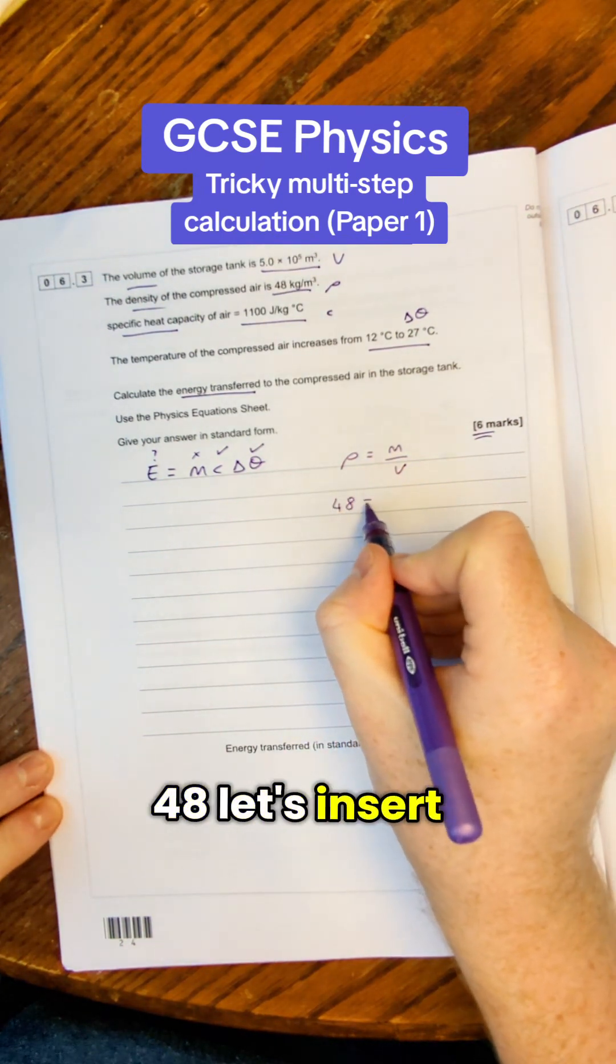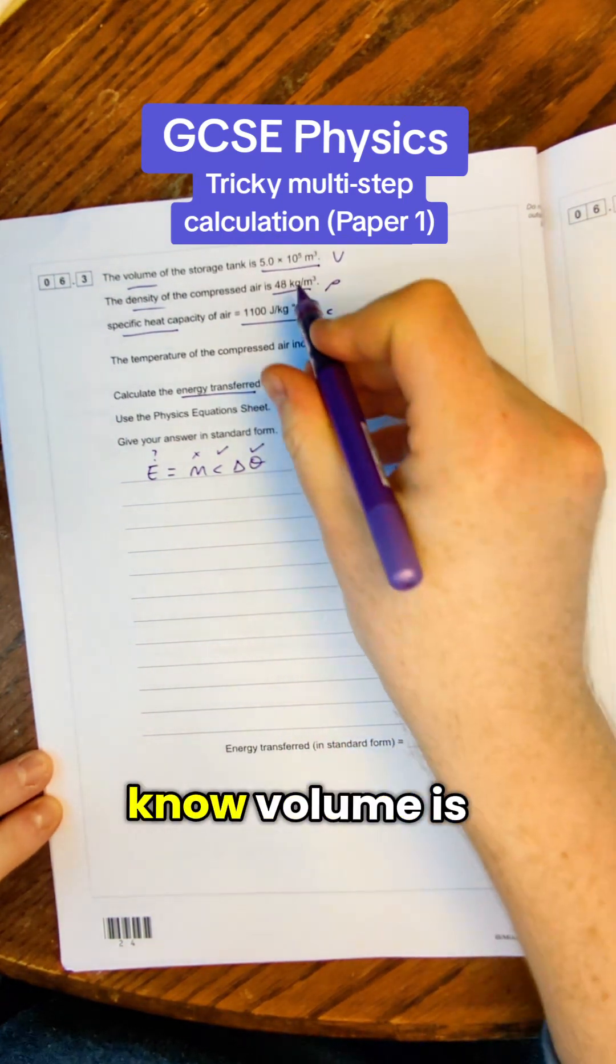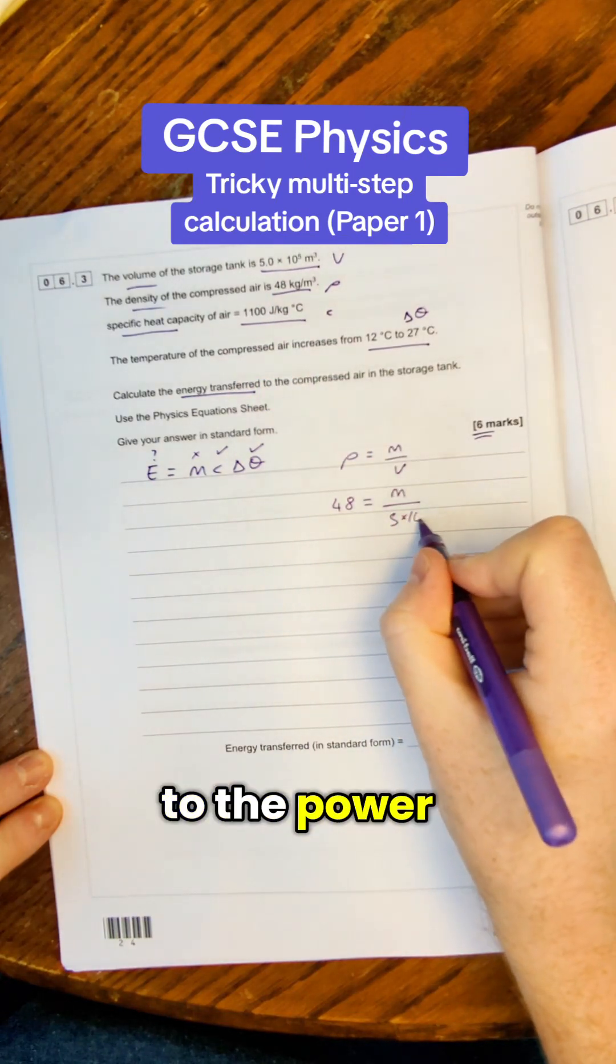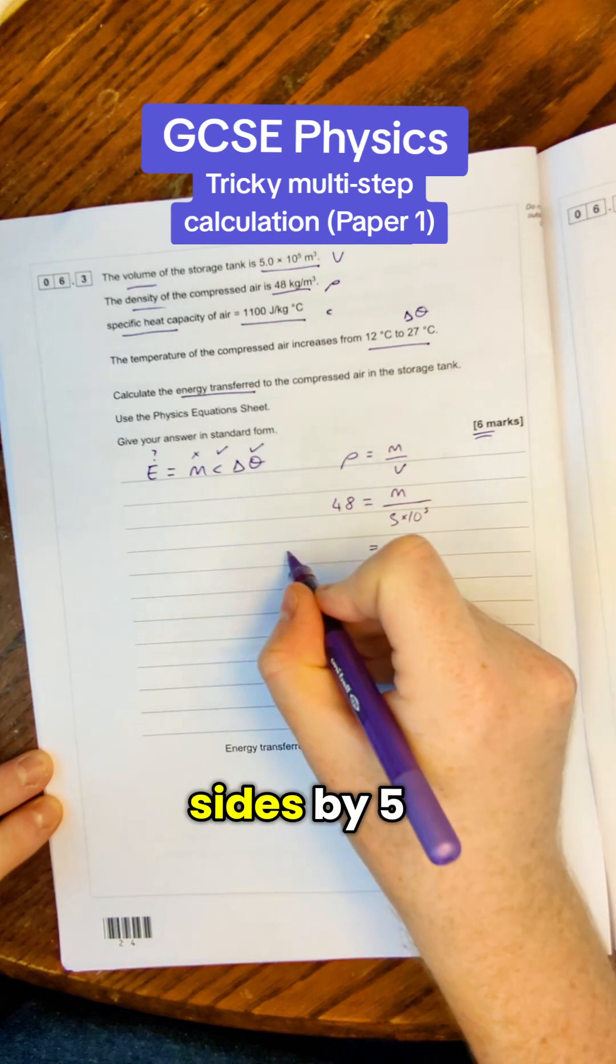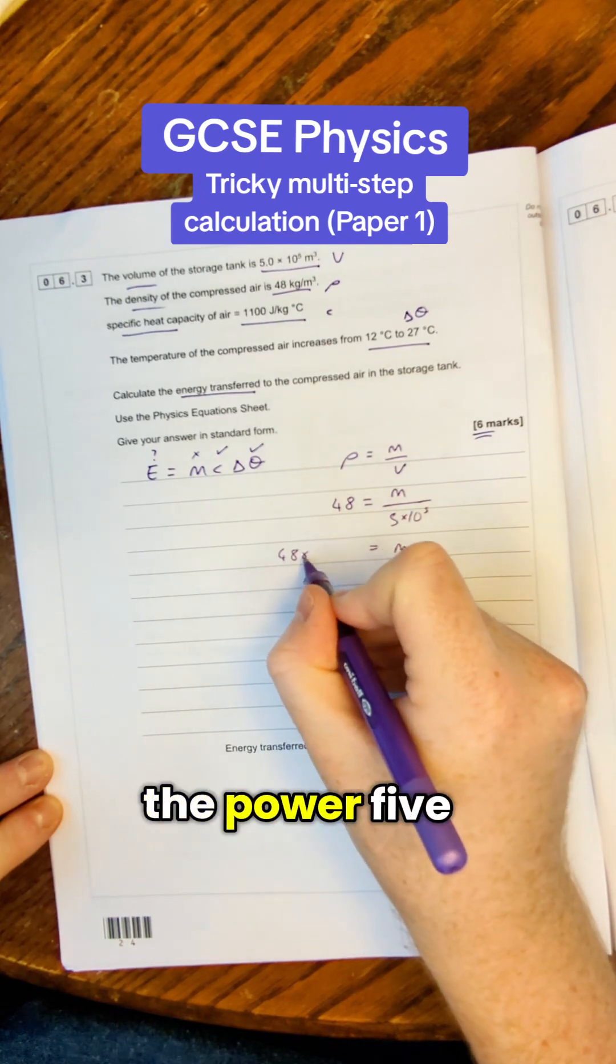So density is 48. Let's insert our values. Mass we don't know. Volume is 5 times 10 to the power 5. So to find out what M is I'm going to need to multiply both sides by 5 times 10 to the power 5. Put it in brackets in case I mess up my standard form.